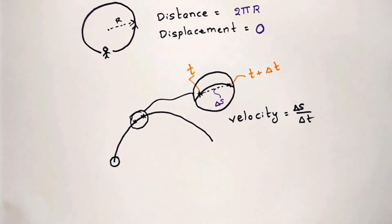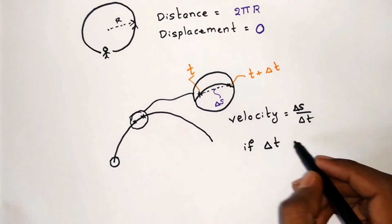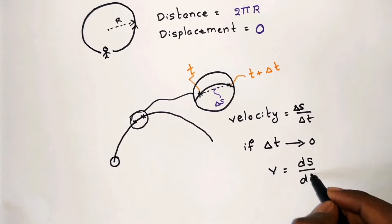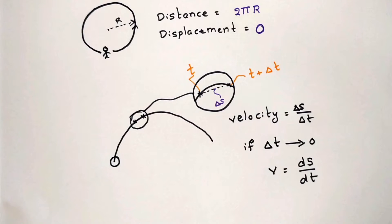The direction of velocity will be equal to that of delta s. Now if this time duration tends to zero, then the equation will be modified as v equals ds by dt, which is a differential equation. This equation will give the magnitude of the velocity.